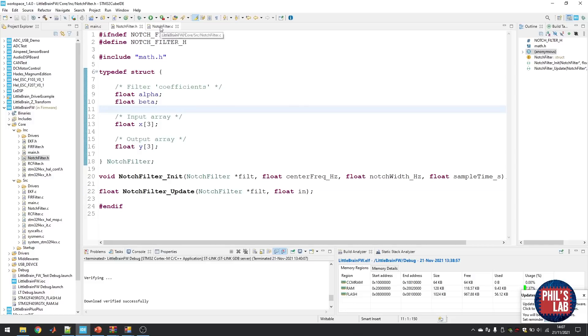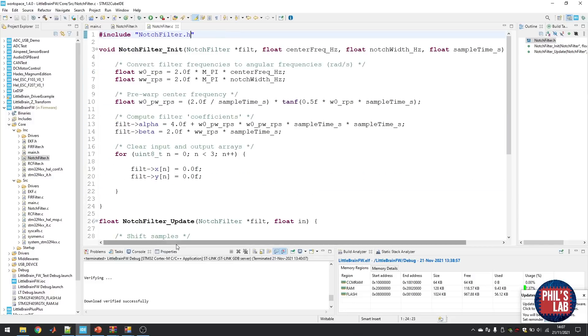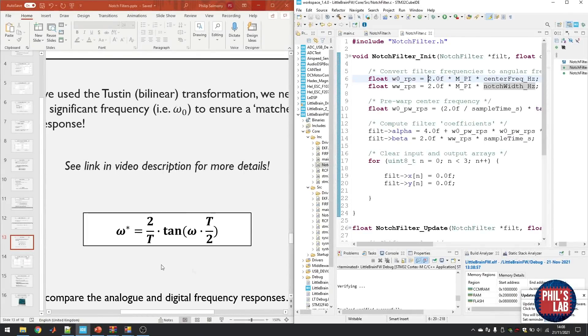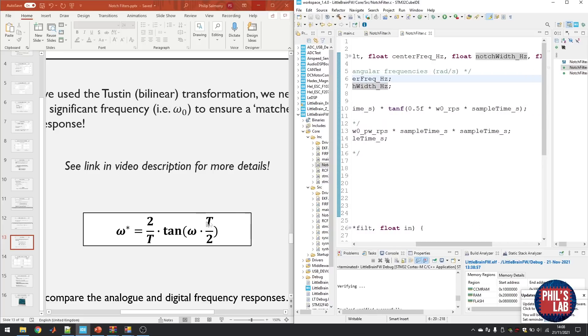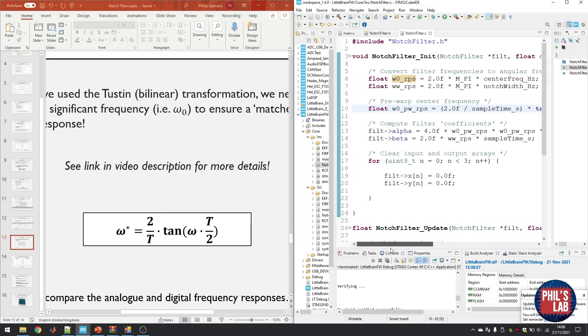So let's go through the notch_filter.c file to see how that's done. The initialization function takes a pointer to the struct, the center frequency in Hz, the notch width in Hz, as well as the sample time that we'll be calling this filter with. The first thing we need to do is convert the filter frequencies from Hz to angular frequencies in radians per second. That is simply by multiplying the frequency in Hz by 2π. Then we need to pre-warp the center frequency. And all I'm doing is using this expression over here and implementing that in software. So it's 2 divided by the sample time times the tan of a half the sample time times our not pre-warped center frequency in radians per second. And that's all there is to it.